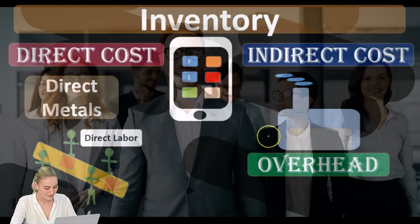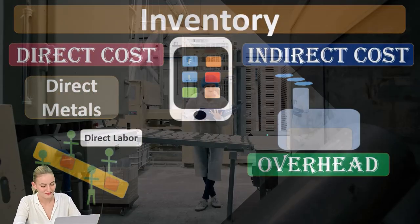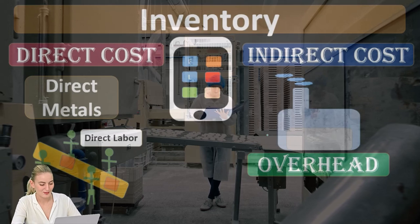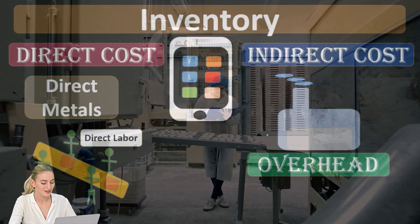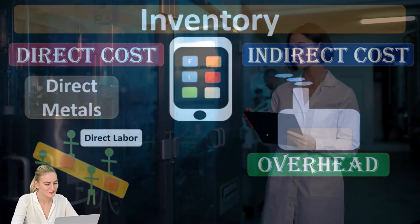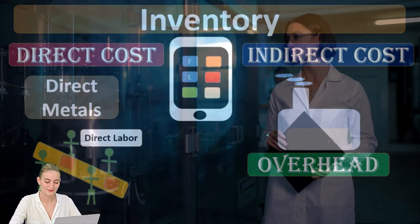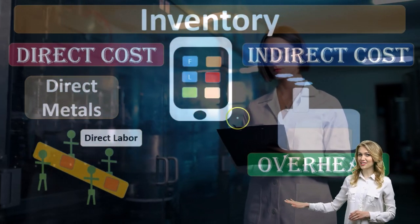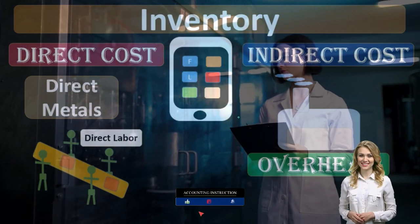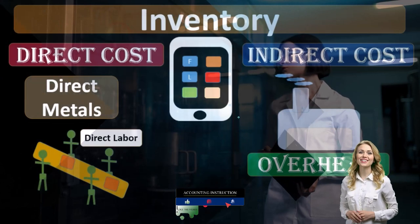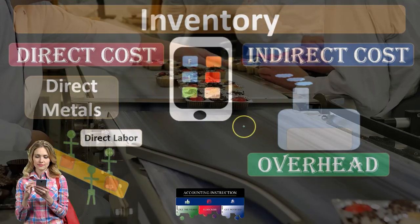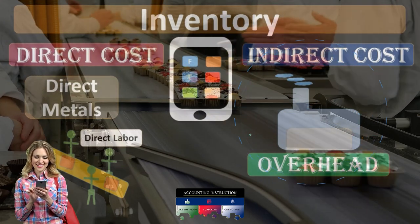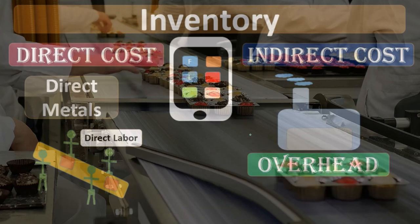Anything in the manufacturing process that relates to the factory, but we can't apply it directly out — so if it's the depreciation on the factory, or the rent on the factory, or the maintenance or upkeep of the factory, the machinery within the factory — if we can't apply it directly to the job, then it's going to go into overhead. Also, things like small tools or glue: those are directly involved in the end product, but it might be too small to directly measure in each of those end products. It's more efficient and cost effective to just put it into overhead and then apply it out in some other way to the specific job or inventory using an estimate.